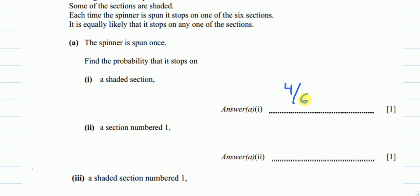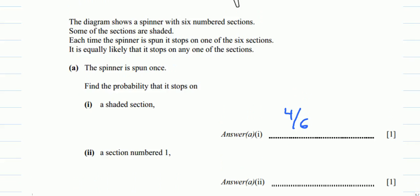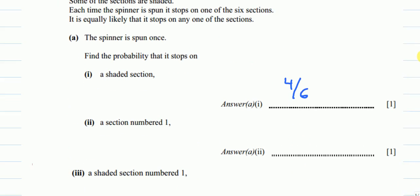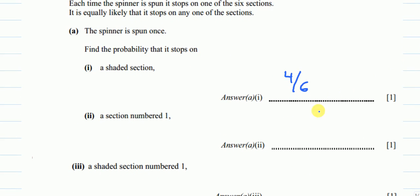Let's see part two: a section numbered one. How many sections do we have numbered one? We have one, two, three — so we have three sections out of the whole six sections.